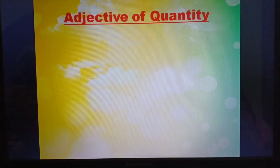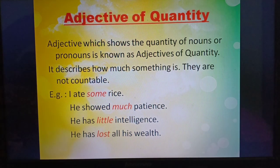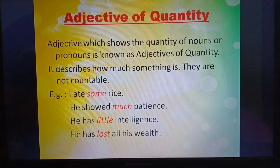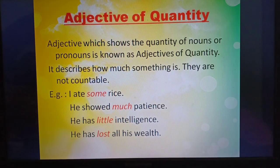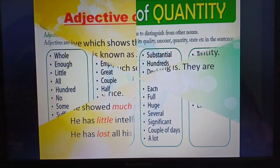Next we will move on to adjectives of quantity. An adjective which shows the quantity of nouns or pronouns is known as an adjective of quantity. It describes how much something is — they are not countable. Example: I ate some rice. How much rice? Some rice — because rice cannot be counted, so the adjective here is 'some.' He showed much patience. He has little intelligence. He has lost all his wealth.